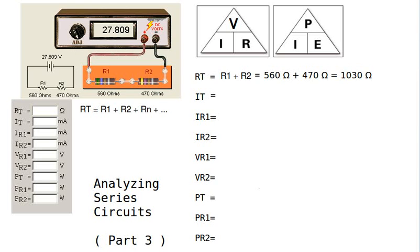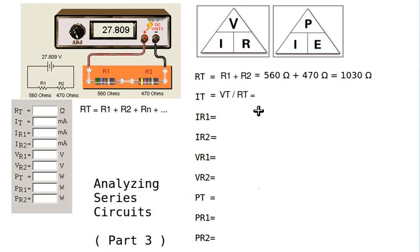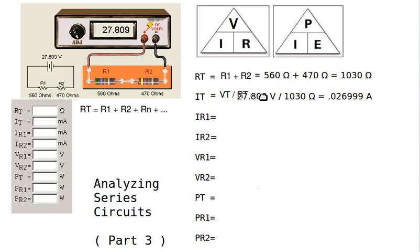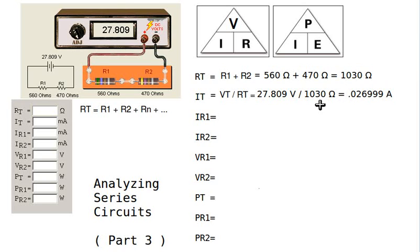In this case, we're referring to the total voltage, which is the power supply voltage, divided by the total resistance we just calculated as 1030 ohms. So we calculate 27.809 volts divided by 1030 ohms, which gives us 0.026999 amperes.